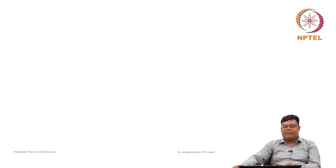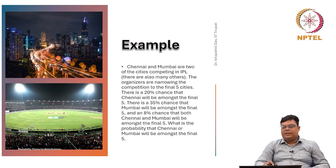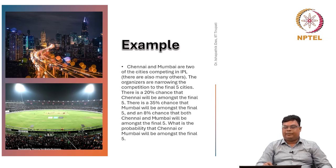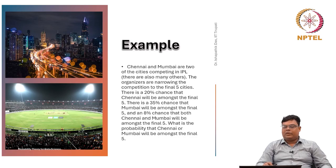Let us discuss one numerical example. Chennai and Mumbai are two of the cities competing in IPL, there are also many others. The organizers are narrowing the competition to the final five cities. There is a 20 percent chance that Chennai will be amongst the final five, a 35 percent chance that Mumbai will be amongst the final five, and an 8 percent chance that both Chennai and Mumbai will be amongst the final five. What is the probability that Chennai or Mumbai will be amongst the final five?